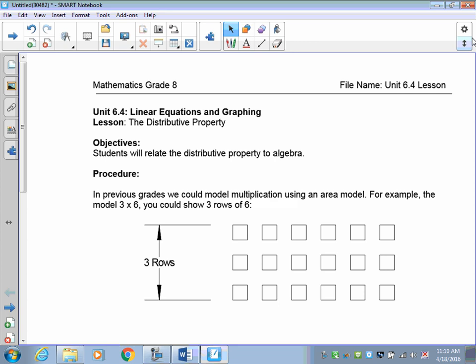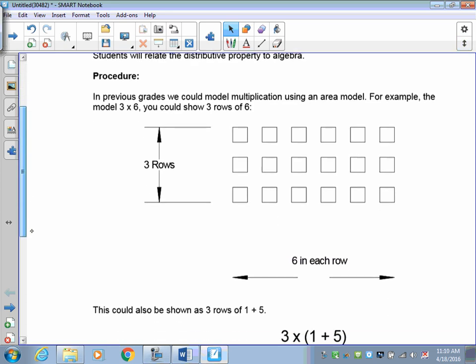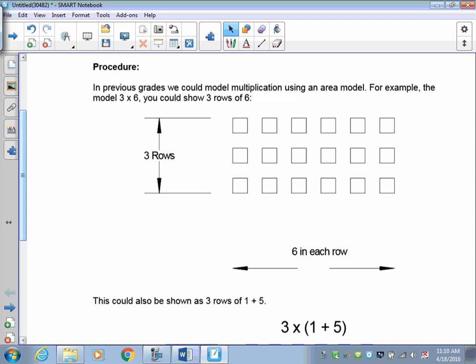In previous grades, we could model a multiplication of 3 by 6, or 3 times 6, by showing you 3 rows of 6. You would count them all up at the beginning. This is called an array.